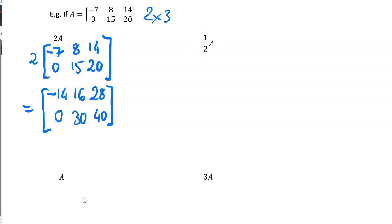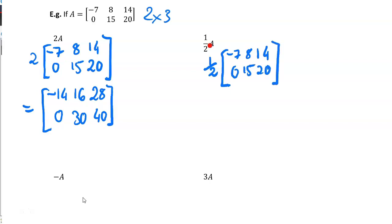Now we've got one half times A — the fraction times by that matrix with elements negative seven, eight, fourteen, zero, fifteen, twenty. Half times negative seven is negative three over two. Half times eight is four. Half times fourteen is seven. Half times zero is zero. Half times fifteen is fifteen over two.